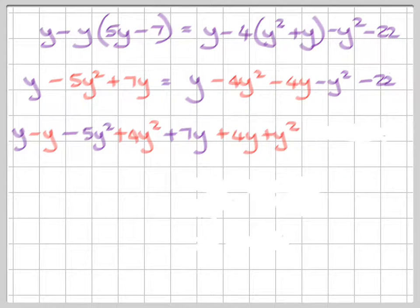So we have our y here and we want to take this y away. So we're going to minus a y there and minus a y on the other side. And then minus 4y² becomes plus 4y² on this side. And then minus 4y becomes plus 4y over there. And minus y² becomes plus y².